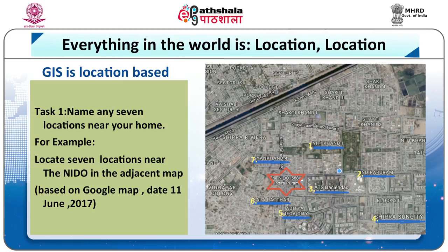You have a map taken from Google Maps on 11 June. Locate seven places around the Nido, which is inside that red star. The places are: number one, Nithi Khan; number two, Indirapuram; number three, ATS; number four, Shipra Sun City; number five, Aditya Mega City; number six, Kalapathar; and number seven, Gyanakhand four. Similarly, you all can locate a number of places around yourself.